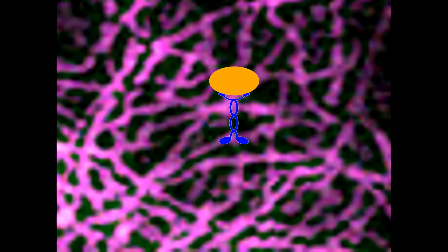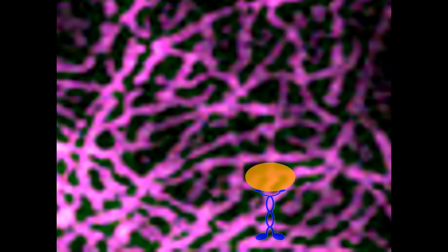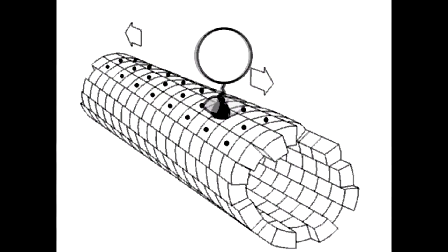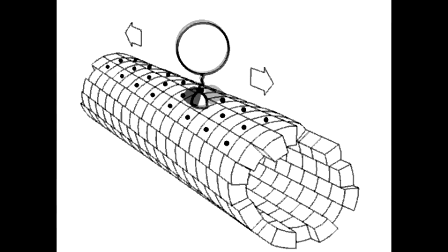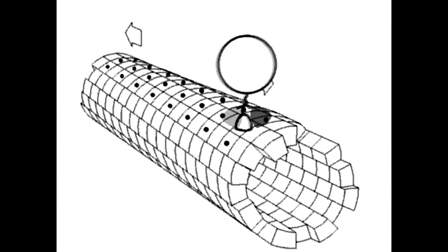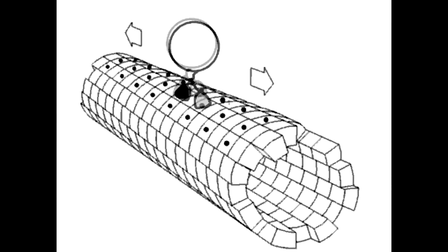Like a railroad track, the microtubules allow objects to move around inside the cell. Motor proteins walk along microtubules, pulling their cargo with them. The Golgi vesicles — the cargo — are pulled along microtubule tracks to the cell membrane.